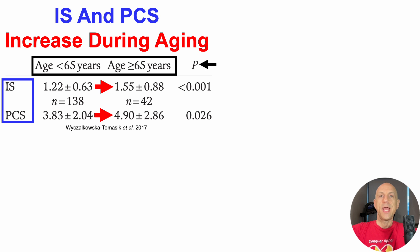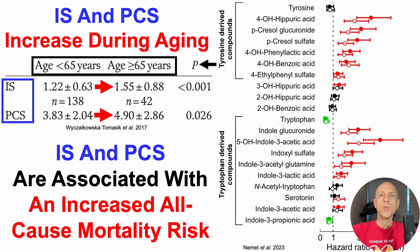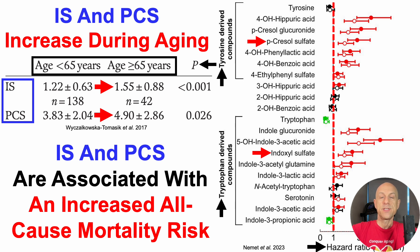These differences are statistically significant, with p-values less than 0.05 in both cases. In addition to these age-related increases, PCS and IS are also associated with increased all-cause mortality risk. On the y-axis we have tyrosine-derived compounds including p-cresyl sulfate, and tryptophan-derived compounds including indoxyl sulfate. The x-axis shows the hazard ratio — risk of death from all causes. The 95% confidence interval for both p-cresyl sulfate and indoxyl sulfate is completely to the right of a hazard ratio of 1, indicating a significant association with increased risk of death from all causes.